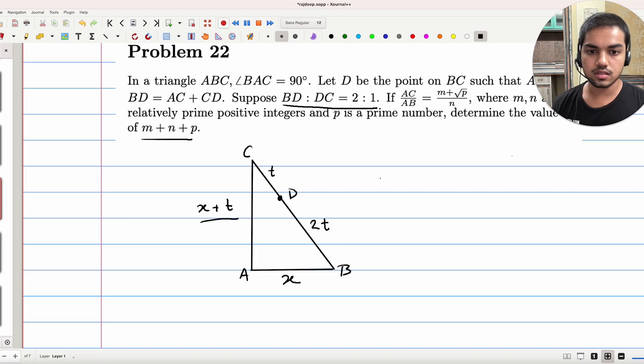And now all we have to do is just look at the fact that this is a right-angled triangle. Because of this, we can apply Pythagoras' theorem to get that X plus T square plus X square is equal to 3T whole square.